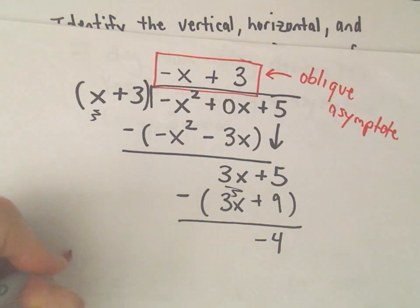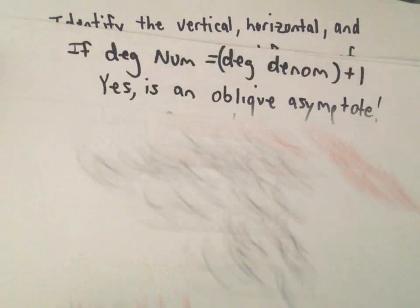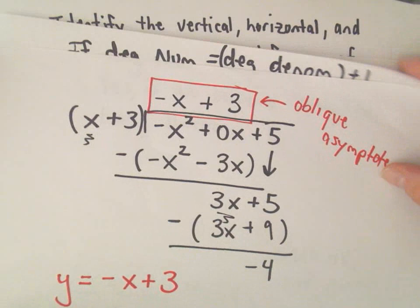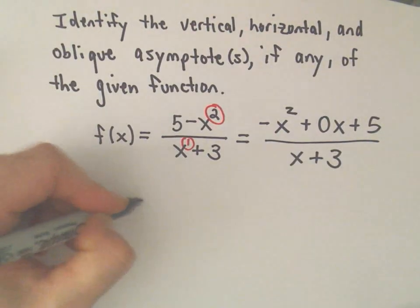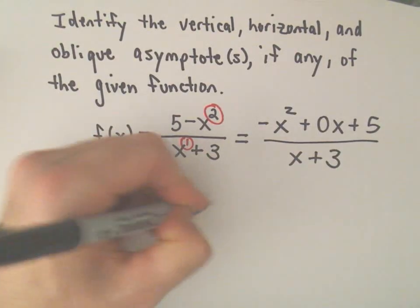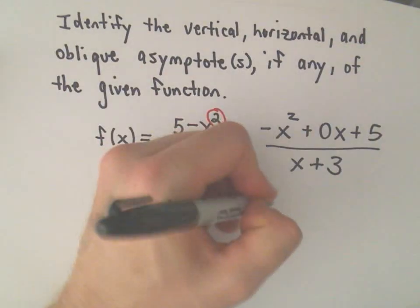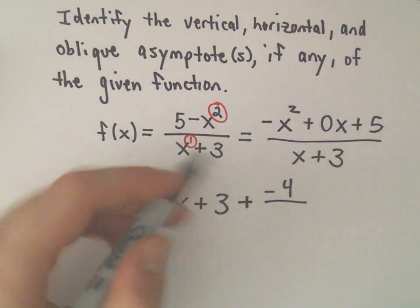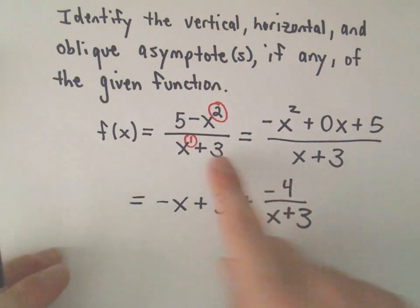So, kind of intuitively, the idea, what we've just done is we've taken that function 5 minus x squared over x plus 3. And we said that's really the same thing as negative x plus 3 plus the remainder, which is negative 4, and we divide that by x plus 3. So, all we've done is just a little bit of algebra to rewrite this function in a different way.